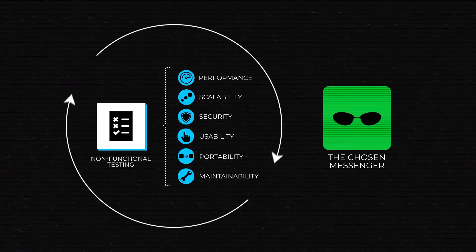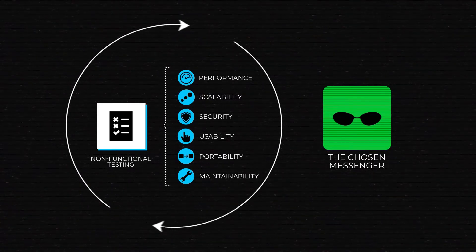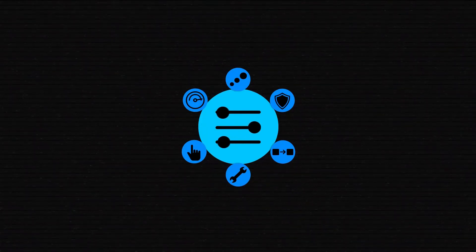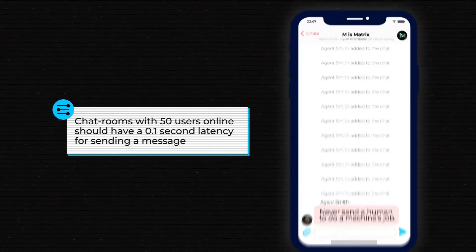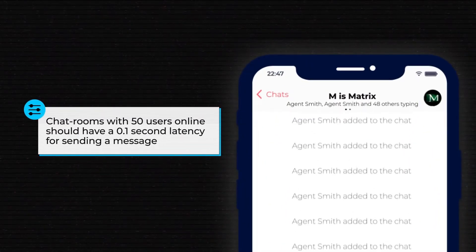Running the tests automatically saves time while keeping track of those properties. It's not rare for a single requirement to address multiple attributes at once. For example: chat rooms with 50 users online should have a 0.1-second latency for sending a message. This means we expect the application to respond nearly instantly with 50 users typing at once — and this can be seen as both a performance and a system scalability metric.